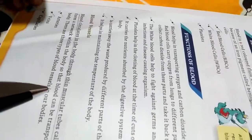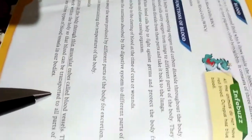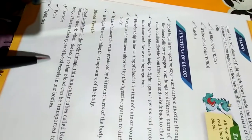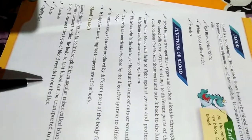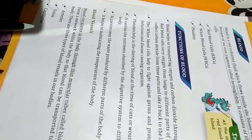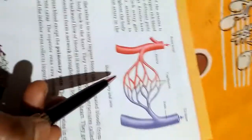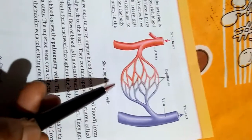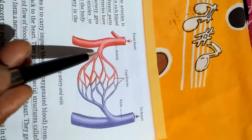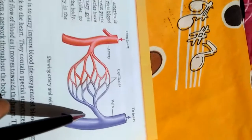Blood circulates in the body through thin muscular tubes called blood vessels. They form a network within the body so that blood can be transported to all parts of the body. There are three types of blood vessels: arteries, veins, and capillaries.